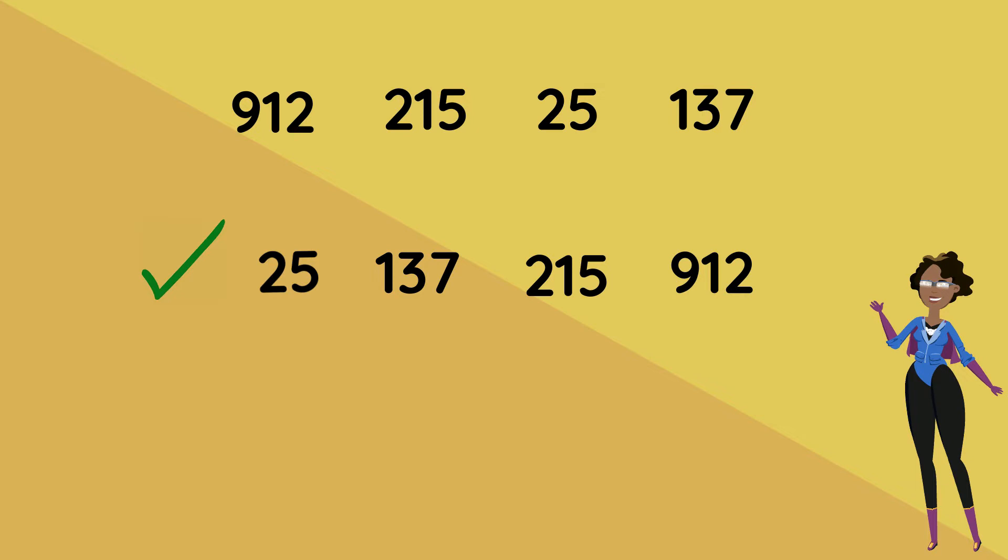If we did it like this, 137, 25, 215, and 912, then it would be inaccurate because 137 and 25 are not in the correct sequence.